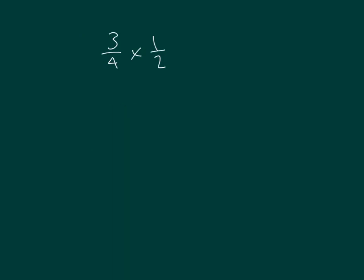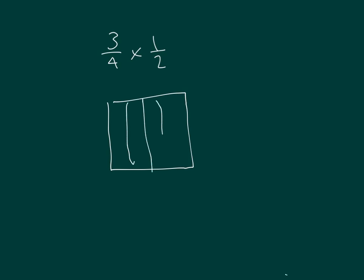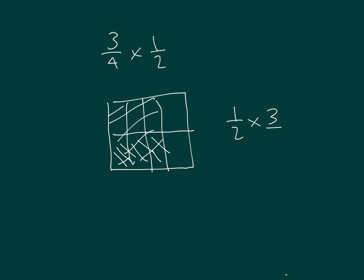Three-fourths times one-half — let's solve this using a rectangular fraction model. Here's three-fourths, and then we take one-half of three-fourths. One-half times three-fourths is equal to three-eighths.